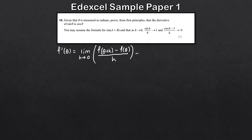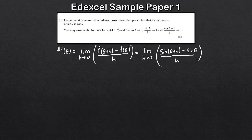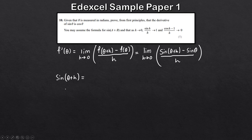Applying this to our question, we get the limit as h tends to 0 of sine(θ + h) minus sine(θ), all divided by h. Notice this is sine of theta plus h, so we need to use our compound angle formula. Using the compound angle formula, sine(θ + h) expands to sine θ cos h plus cos θ sine h.